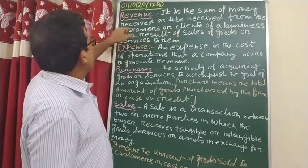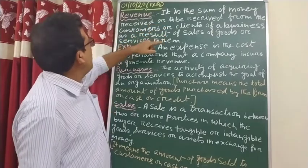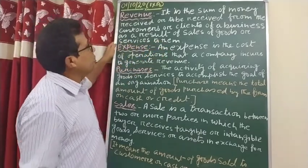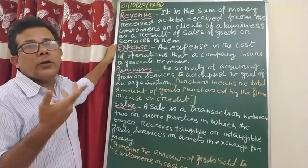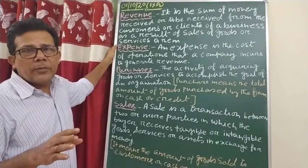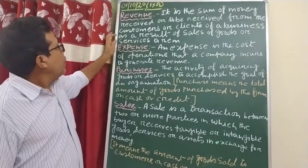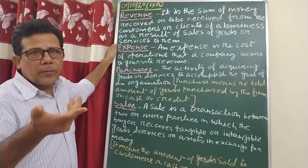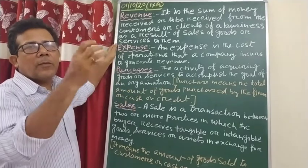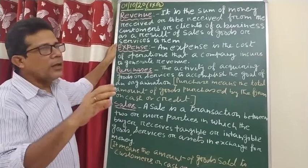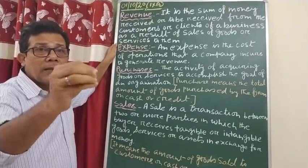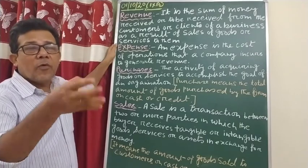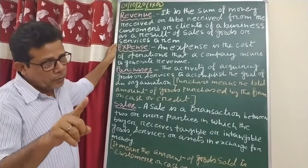Revenue is the sum of money received, or to be received, from the customers or clients of a business, as a result of sales of goods or services to them. That means you must have sold something, or provided some service, and on behalf of that product or service, whatever money you are going to receive or have already received, that is called revenue. Revenue deals with how much you receive for any work done or any service provided by an organization.